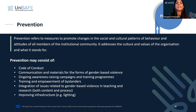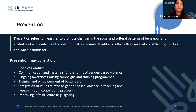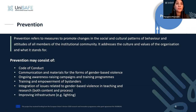A clear code of conduct is a set of rules and guidelines laying out the expected behaviors of members of the organization. Another prevention measure could be communication and materials for both existing and newcomers — staff and students — about the forms of gender-based violence.